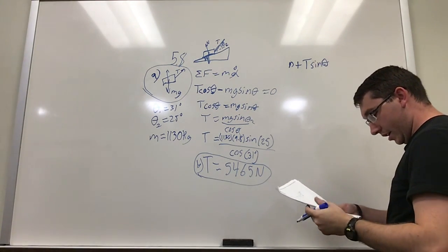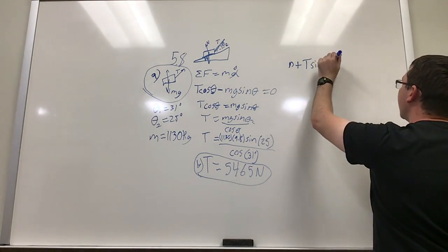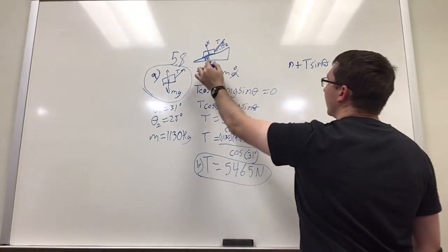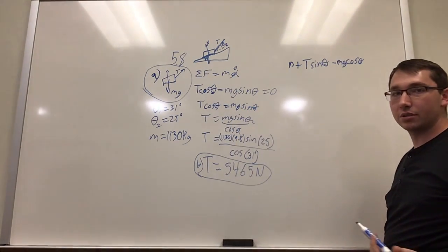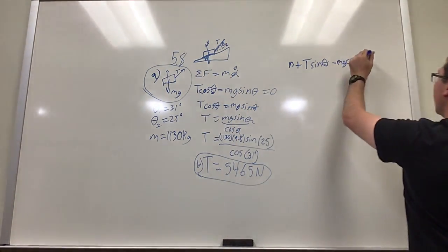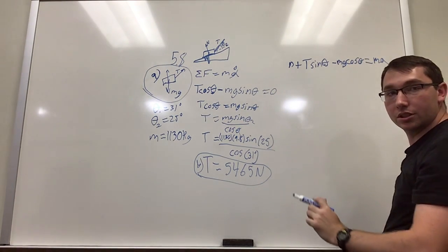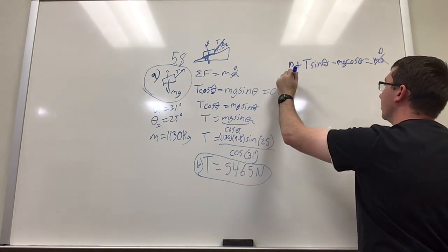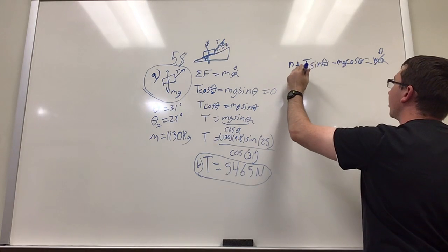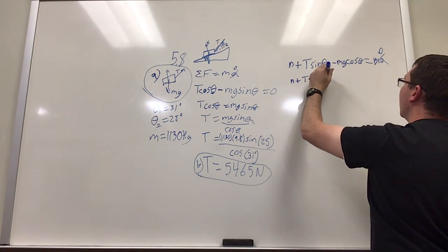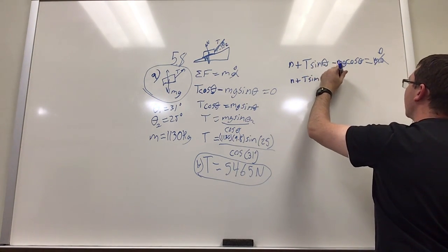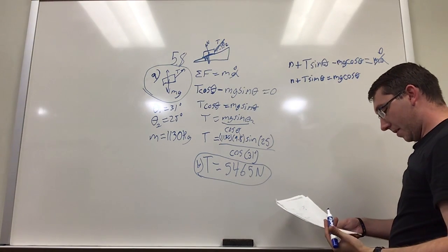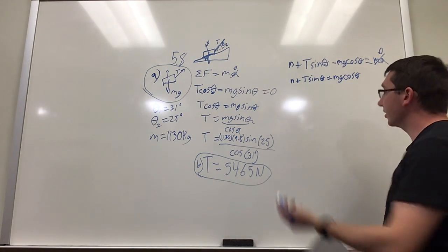And that's going to be equal to the mass times the acceleration. This goes to zero because there is no acceleration, so we can rewrite this as normal force plus tension sine of theta equals mass times gravity times the cosine of theta, and then basically just solving for n again.